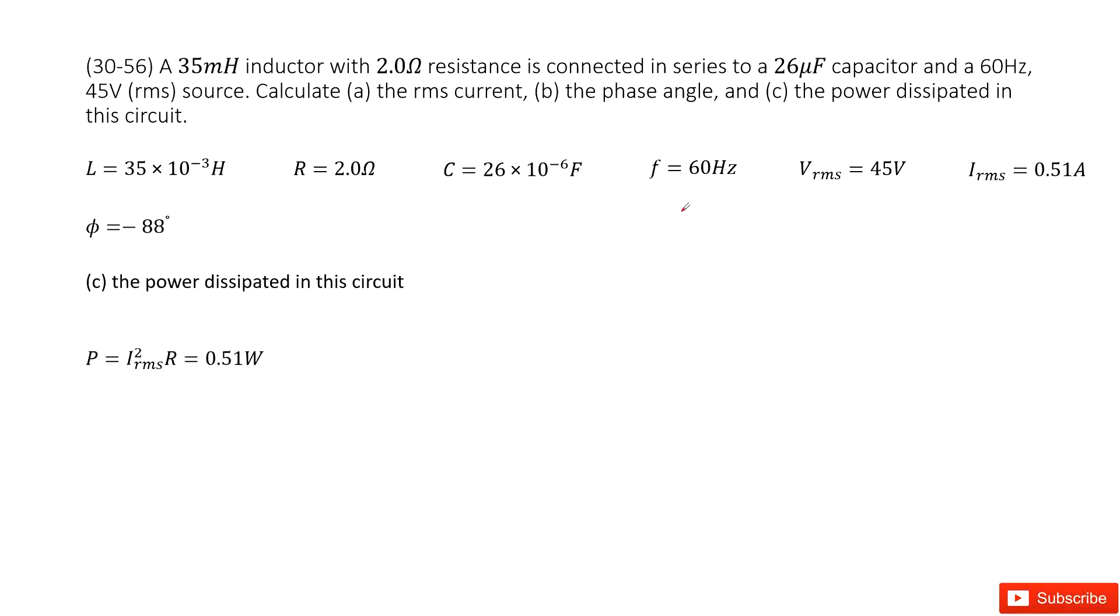The next one is find the power consumed by the circuit. There we can consider the root mean squared current squared times R. This is very straightforward or very similar to Ohm's law. Ohm's law tells you the current I squared times R. This is for Ohmic devices.